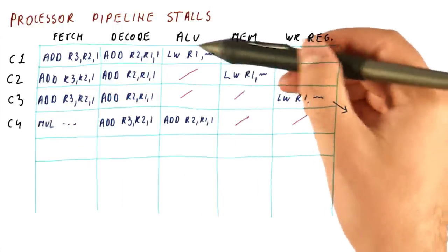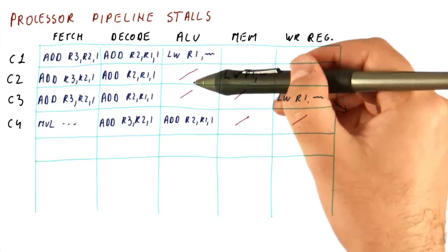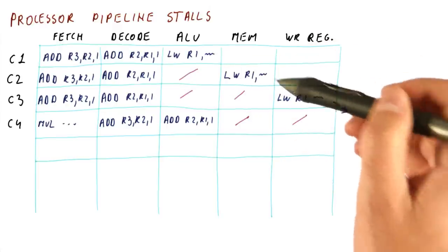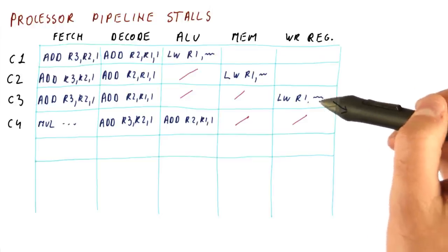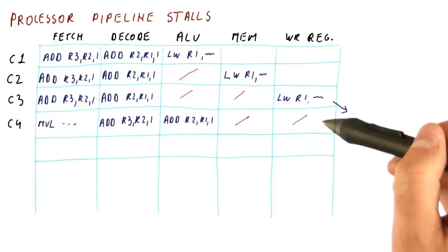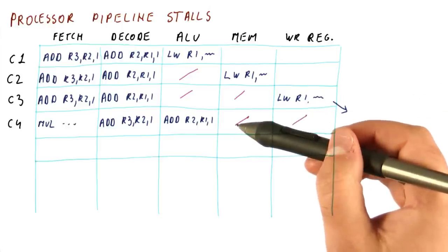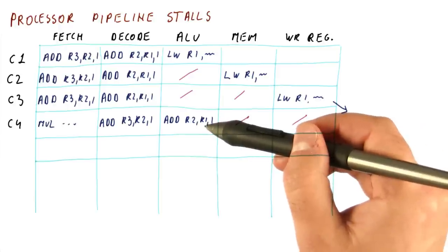So as you can see here, a processor pipeline stall creates a problem because normally every cycle after the load leaves, every cycle we would have the next instruction leave. But in this case, after the load leaves, there are two cycles worth of pipeline bubble that finish before the next instruction.